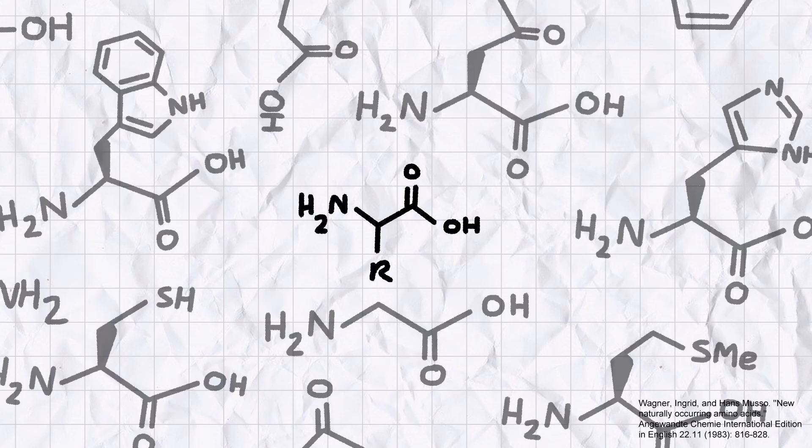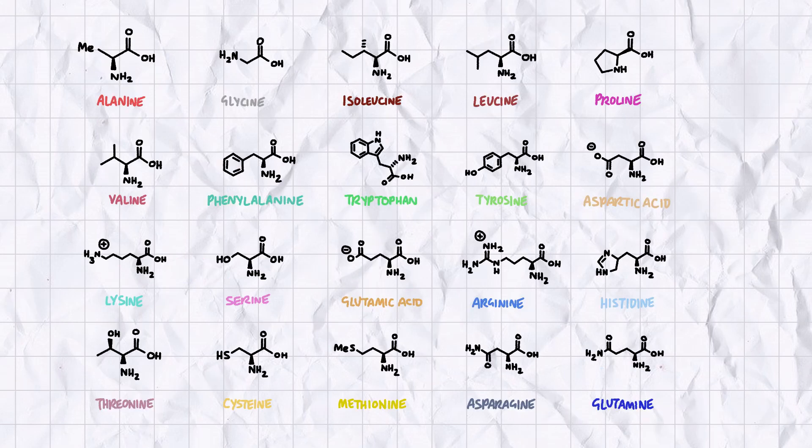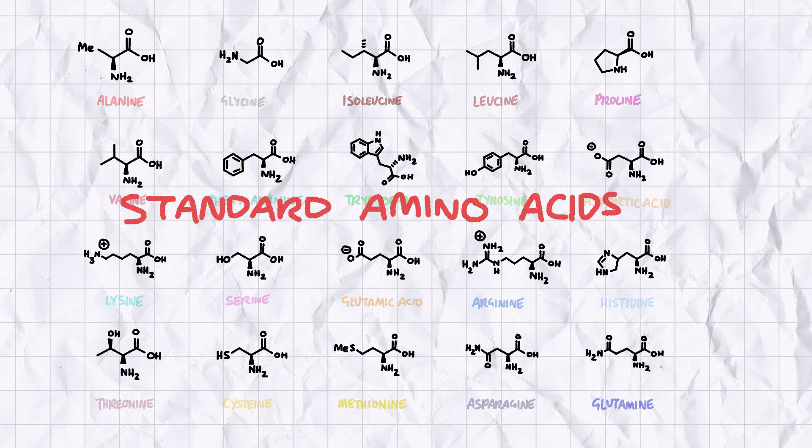Now there are, to use a technical term, a stumungous number of amino acids and biochemists have discovered over 500 different R groups in nature. But the term amino acid is largely used to talk about the 20 compounds found in DNA, also known as the standard amino acids.